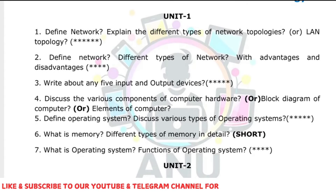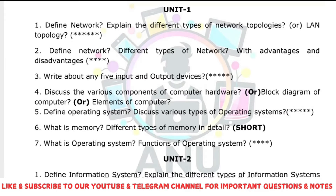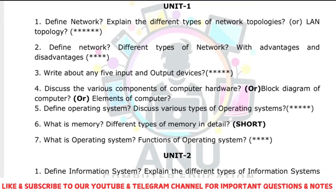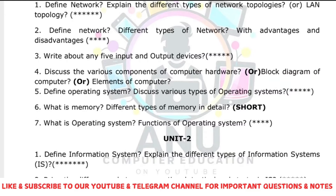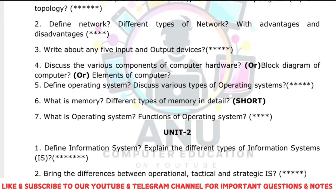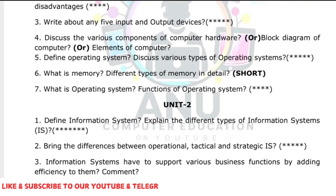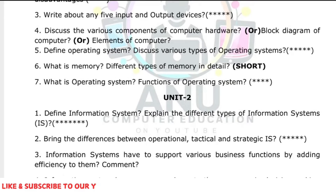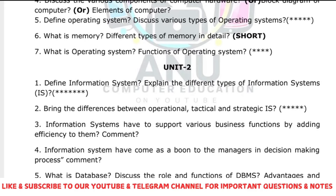For unit two, define the information system and explain the different types of information systems — this is a very important question. Also important is the difference between operational, tactical, and strategic information systems. These first two questions from this unit are very important; the remaining two can be left.